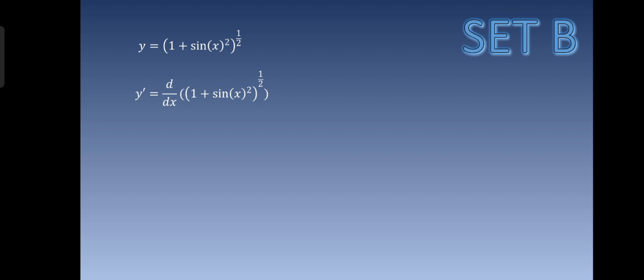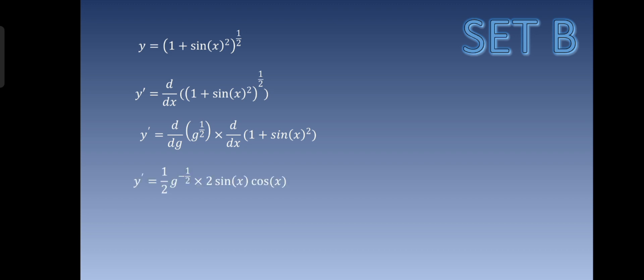We will get y prime is equal to d over dg of g raised to one half, times d over dx of 1 plus sine x raised to 2. Differentiating gives y prime is equal to one half g raised to negative one half, times 2 sine x cosine x. Then we substitute back.